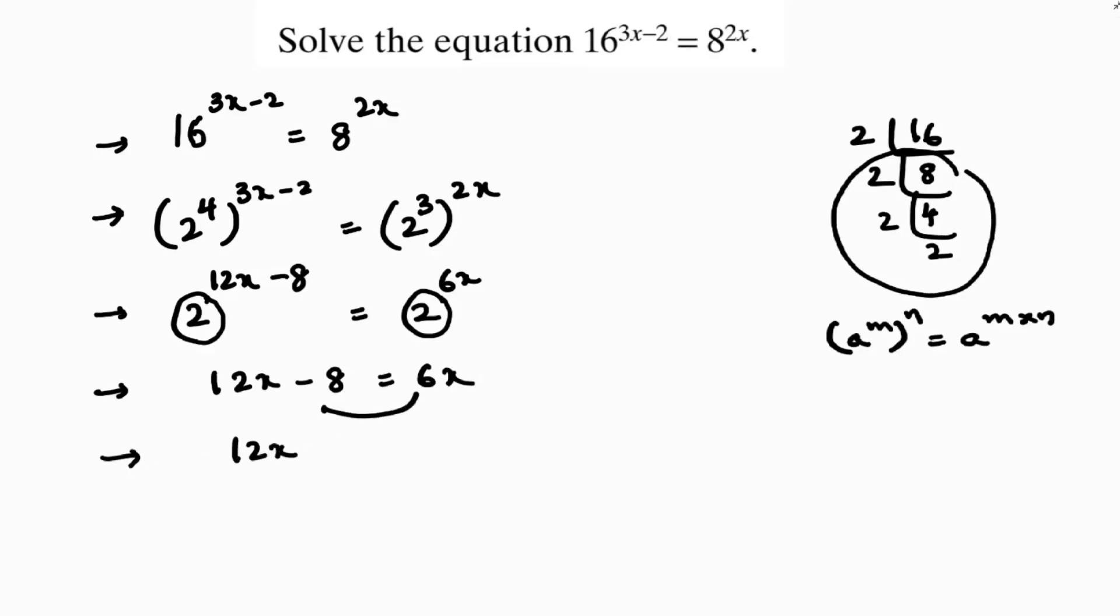12x if we transpose this minus 6x equals minus 8 if we take to the other side plus 8. So 12x minus 6x is 6x equals here 8.